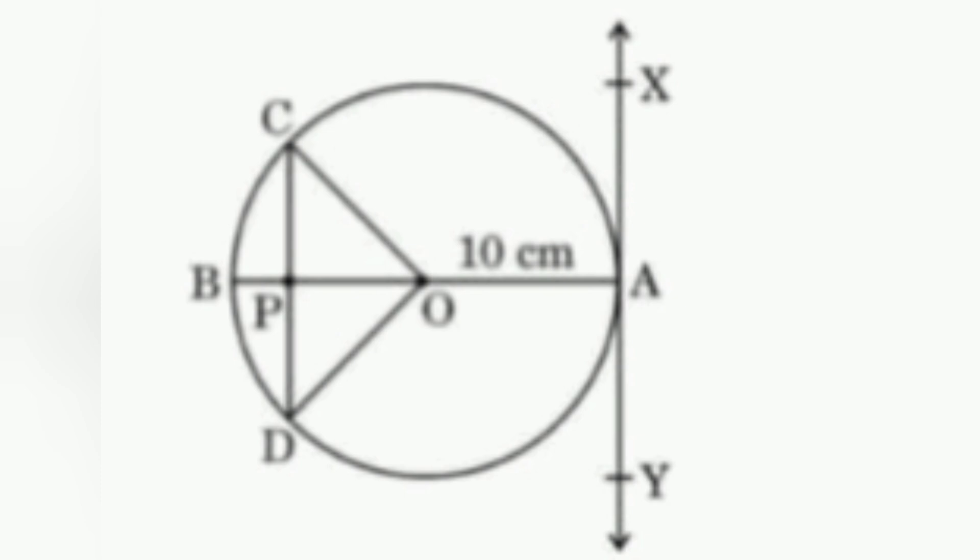OP bisects the chord CD, so the length of the chord CD is two times the length of CP. Therefore, CD equals 2 times 8, which is 16 centimeters.